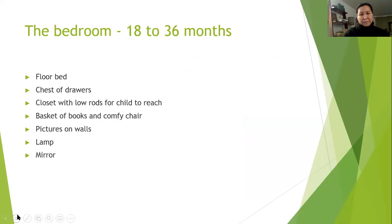For the bedroom for 18 to 36 months, a floor bed is great. It allows the child independence to get into their bed and when they're done resting, independence to get up as well. You want all the same things you have in an infant bedroom. Some different things you might add at this age: low rods in the closet for the child to reach, giving them even more independence when choosing what to wear.